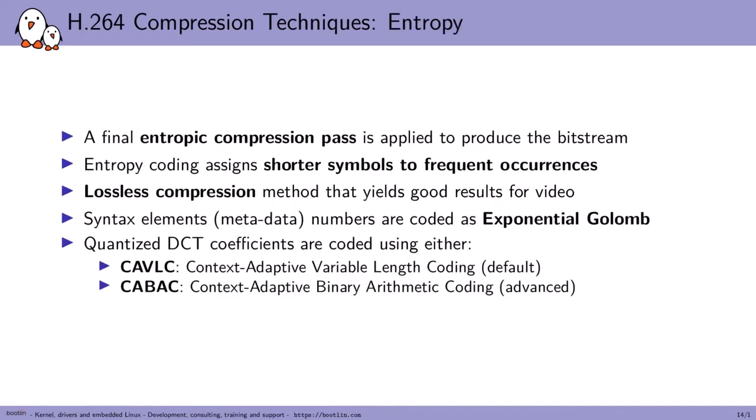The last compression technique is entropy compression, a very common form of compression that assigns shorter symbols to frequent occurrences in the input data — a lossless compression that works well for video. There are two main types used for quantized DCT coefficients. The basic one is Context-Adaptive Variable Length Coding (CAVLC). The more advanced one, enabled in high profile, is Context-Adaptive Binary Arithmetic Coding (CABAC). CAVLC is a form of Huffman coding, while CABAC is arithmetic coding — more complex but providing better results.